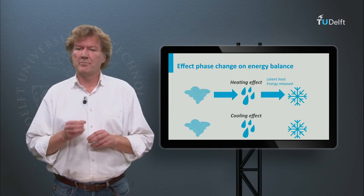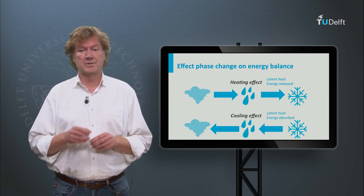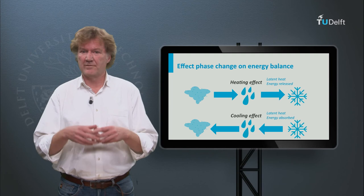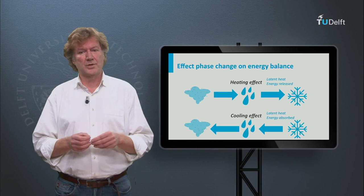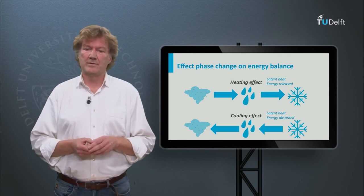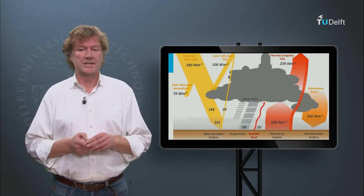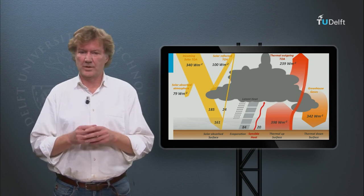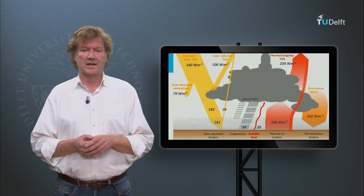These phase changes are extremely important in the climate system. During condensation the kinetic energy of the molecules is reduced and released into the environment. We speak of the release of latent heat. This warms the environmental air. During evaporation the reverse occurs: the water vapor molecules gain kinetic energy, which is taken from the environment. This cools the environmental air. Going back to the atmospheric energy balance: part of the energy absorbed by the earth is used for the evaporation of water. The water vapor moves upwards into the atmosphere, condenses into a cloud and releases its energy in the process. Clouds are a major transporter of energy in the atmosphere.